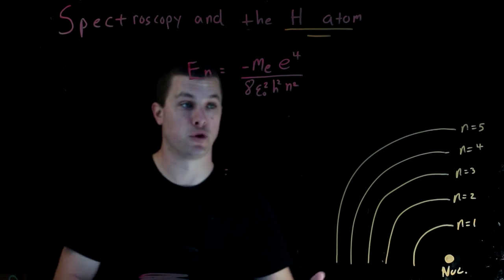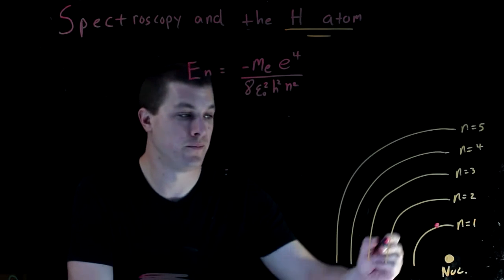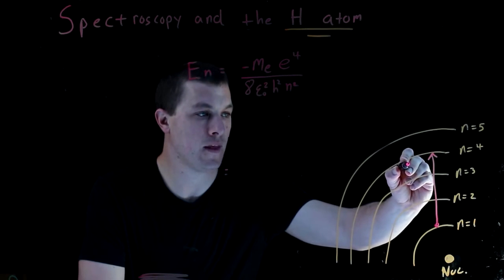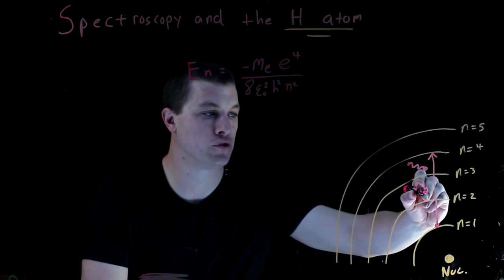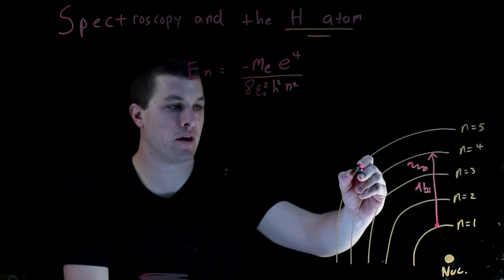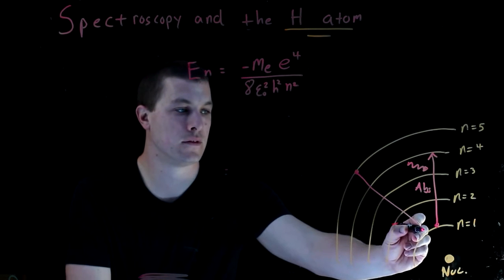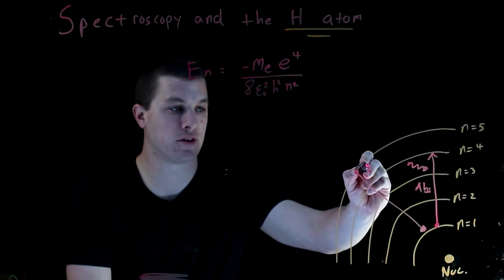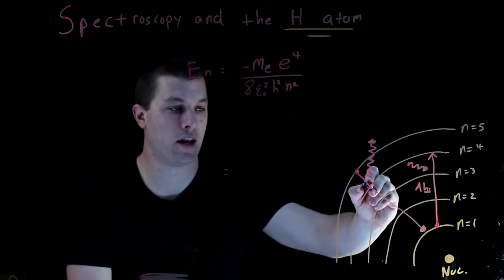We can have an absorption process where our electron starts out at n equals 1 and goes up to say n equals 4 — that took up a photon, so we call that absorption. On the other hand, you can have emission, where an electron in the n equals 5 state relaxes to the ground state, n equals 1, and that puts off a photon. So we call that an emission process.